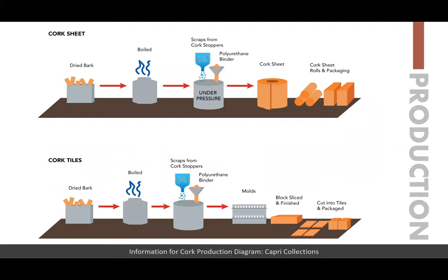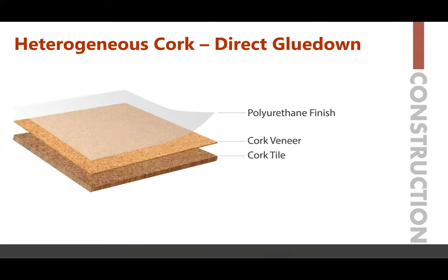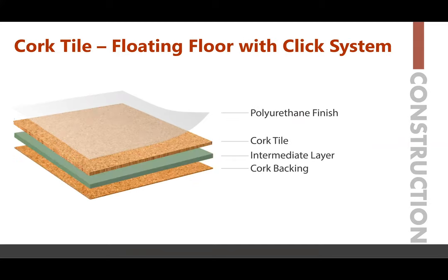Looking at cork production: cork sheet can also be used as underlayment. After boiling, scraps from cork stoppers are mixed with a polyurethane binder to make cork sheet. For cork tiles, the material is placed in molds, sliced into blocks, finished, cut into tiles, and packaged. There are three structures: homogeneous cork (direct glue-down with cork tile and a simple polyurethane finish), heterogeneous cork (direct glue-down with cork tile, cork veneer, and polyurethane finish in layers), and a floating floor with a click system similar to rigid core LVT, which has cork backing, an intermediate layer, cork tile, and polyurethane finish.